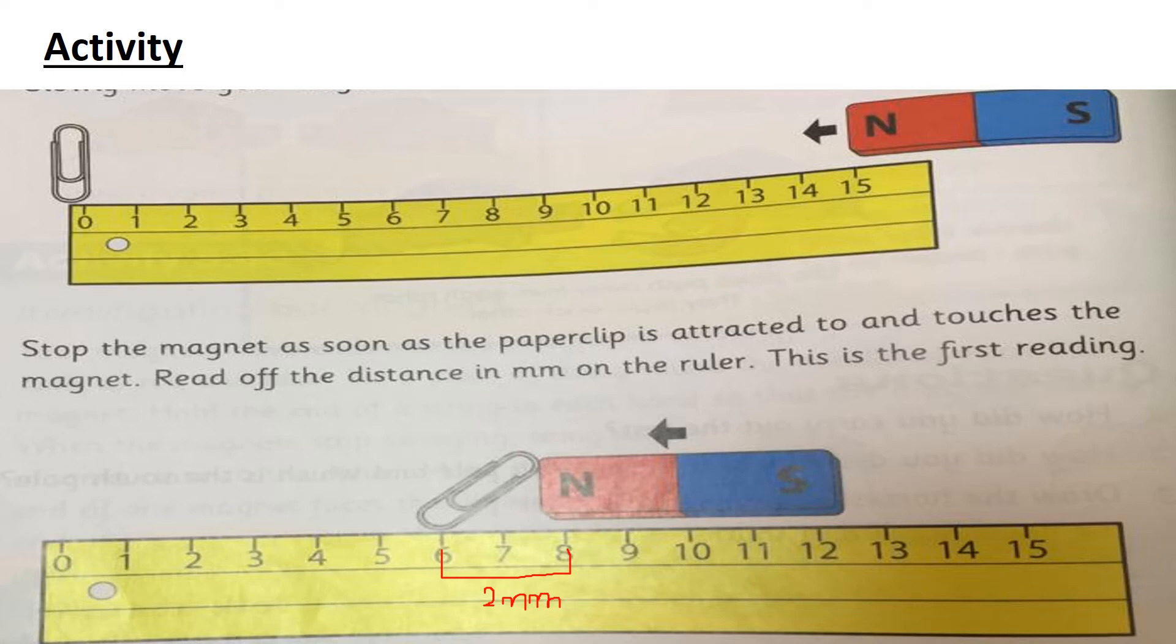So how much is two millimeters? Now the same process we can do by the second observation. We can again start from the starting like this and then we can check again. Maybe there is a little difference. Let's suppose the second reading is from here to here. So it is about three millimeters.